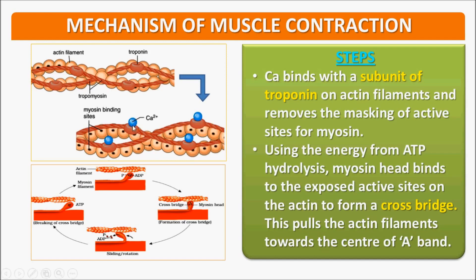Ca²⁺ ions go and bind with the troponin on the actin filament — troponin has a site, a depression where the Ca²⁺ ion binds. Ca²⁺ binds with the subunit of troponin on the actin filament and removes the masking of the active sites for myosin. Using the energy from ATP hydrolysis, the myosin head binds to the exposed active sites on actin to form a cross bridge.